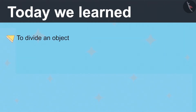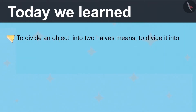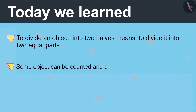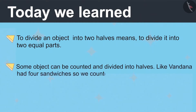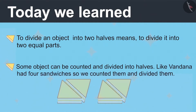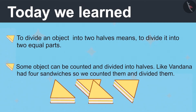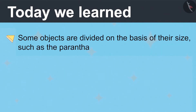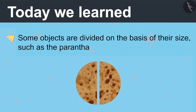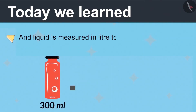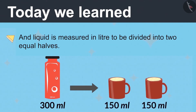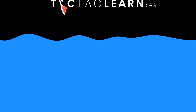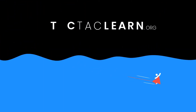Today we learned that to divide an object into two halves means to divide it into two equal parts. Some objects can be counted and divided into halves, like Vandana had four sandwiches, so we counted them and divided them. Some objects are divided on the basis of their size such as the paratha. And liquid is measured in liter or milliliter to be divided into two equal halves.